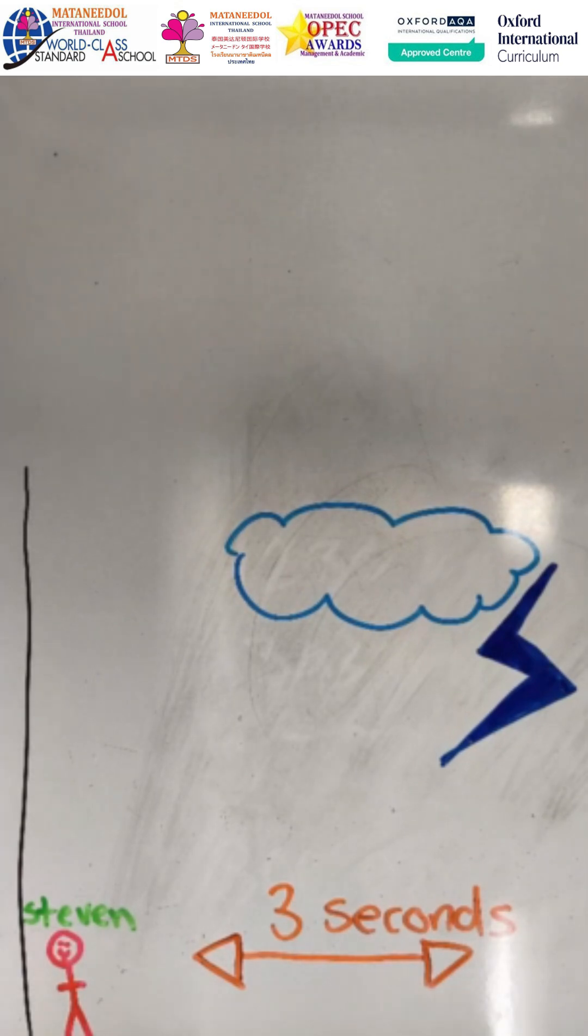All right, here's a little scenario. We have a little boy here called Stephen, and Stephen is close to a lightning storm. So Stephen sees a lightning bolt, but he doesn't hear the thunder at the same time. And that's because light and sound travel at different speeds, right?